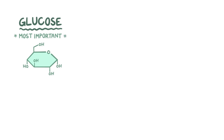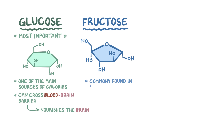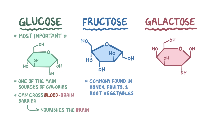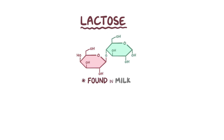Glucose is the most important member of the sugar family, and it's a monosaccharide. It's one of the main sources of calories for the body and is able to cross the blood-brain barrier and nourish the brain. Another monosaccharide is fructose, which is commonly found in honey, fruits, and vegetables. Finally, there's the monosaccharide galactose, known as milk sugar, because it's only found in nature when it links with glucose to form lactose, a disaccharide found in the milk of mammals, which includes cow milk as well as human breast milk.